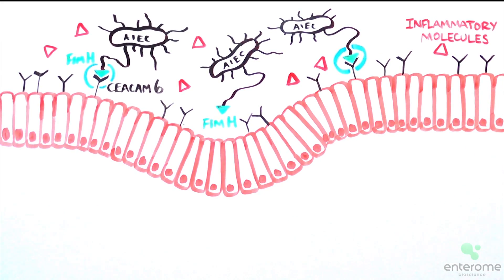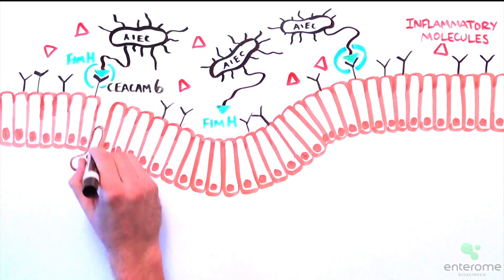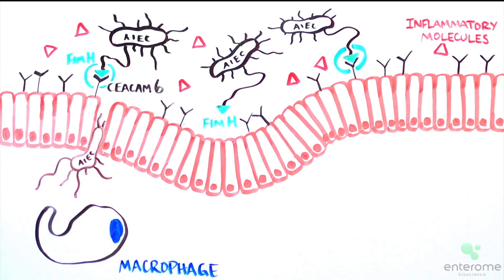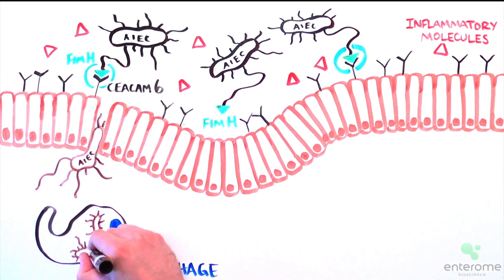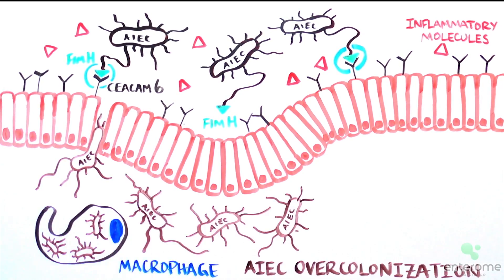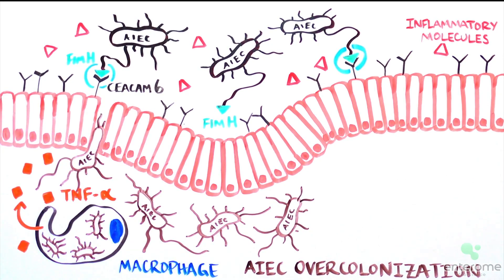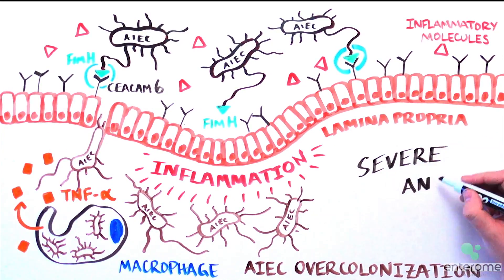AIEC is skipped from degradation in Crohn's disease patients who have a genetic predisposition that disables autophagy. After binding to the intestinal cells, AIEC translocate to the lamina propria, enter the macrophages, and over-colonize. At this point, TNF-alpha is secreted, and the disease becomes more severe and chronic.